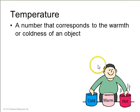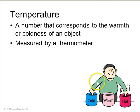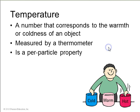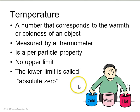So what is temperature? Temperature is a number that corresponds somehow to the warmth or coldness of an object. Something might be warm, hot, cold — there's a number associated with all of those feelings, and you can measure that number with a thermometer. So it's a per-particle property; something with more particles doesn't necessarily change in temperature. There's no upper limit on temperature, but there is a definite lower limit, which we call absolute zero.